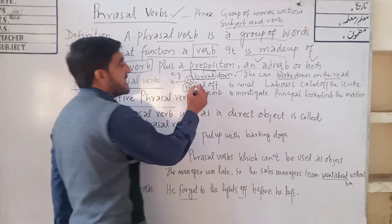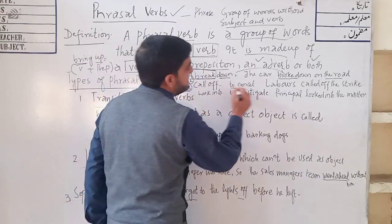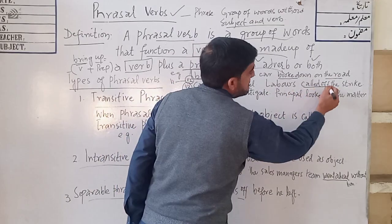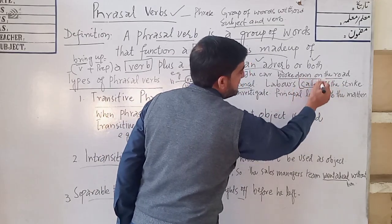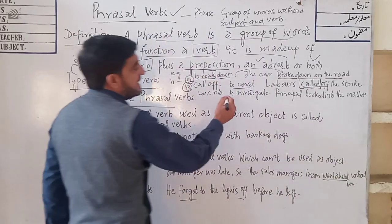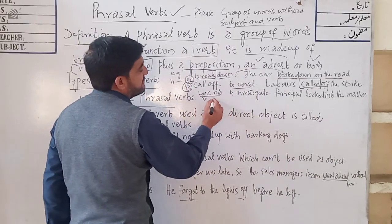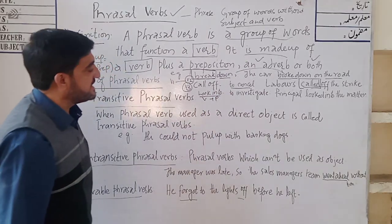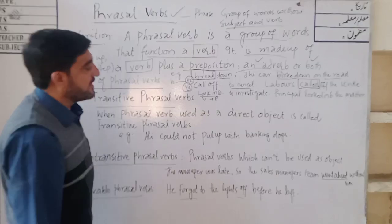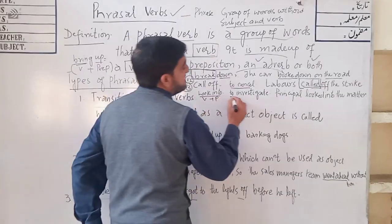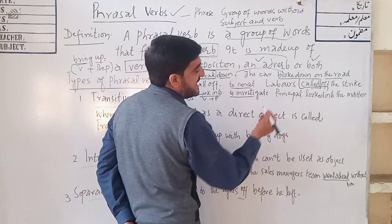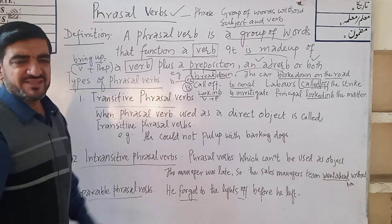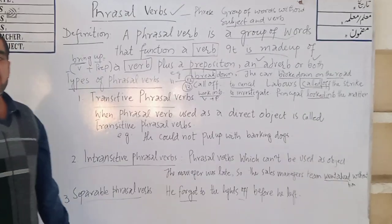'Call off, call off' means to cancel — for example, 'They called off the strike.' So 'called' is V2. Then 'look into' — 'look' is the verb, 'into' is the preposition. 'Look into' means to investigate. For example, 'The principal looked into the matter.' This is a common example of a phrasal verb.